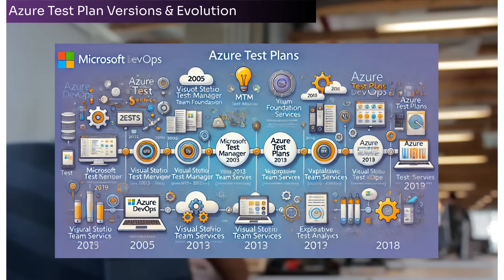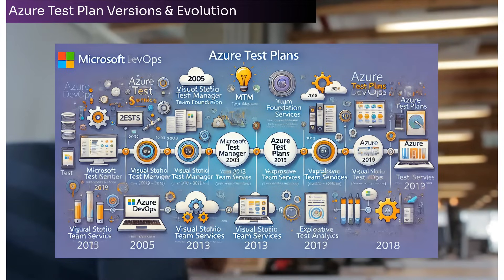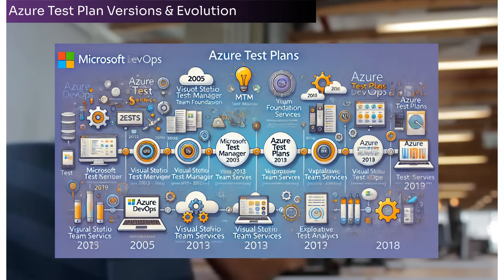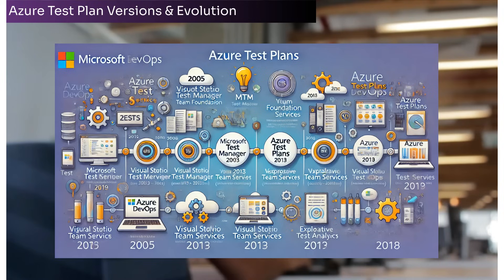Then came the Birth of Azure DevOps from 2018 onwards. Microsoft rebranded VSTS to Azure DevOps, introducing it as a modular suite of services including Azure Boards, Repos, Pipelines, Artifacts and Test Plans. Azure Test Plans was introduced as a standalone service, offering a modern web-based interface for manual and exploratory testing.